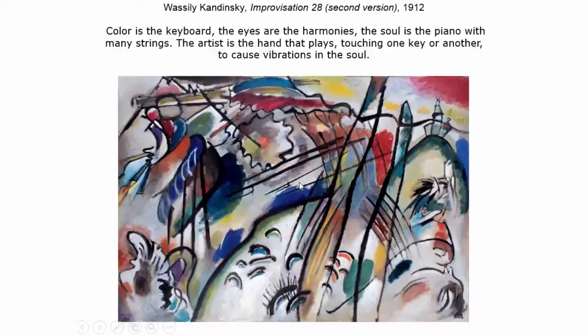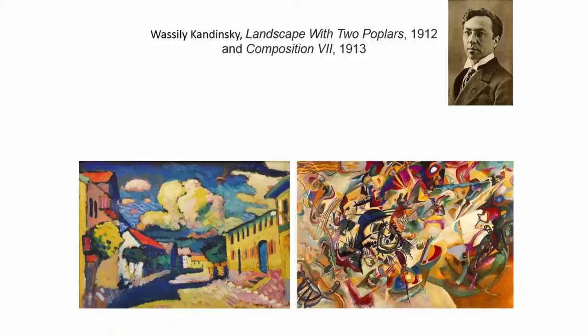He started out with scenes from Russian villages and then developed his style into complete abstraction. Look at the dates — 1913. This is a very typical Kandinsky painting: very vibrant and full of abstract shapes and forms. He was obsessed with black holes, for example, and had all kinds of interests that then became inspiration for his paintings.